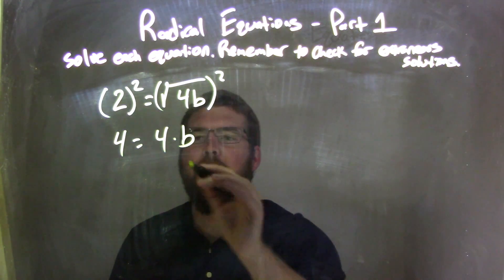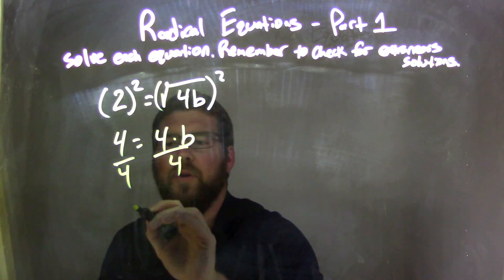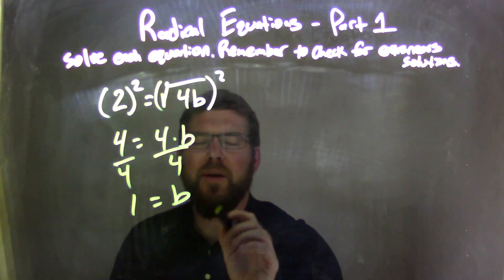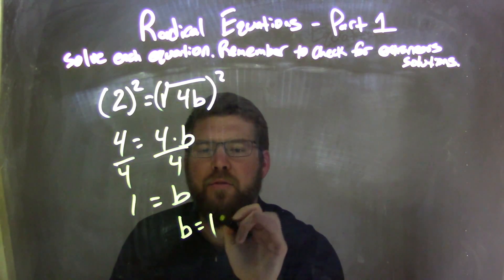To get b by itself, I have to divide by 4 on both sides, leaving 4 divided by 4 is 1, equals b. I can rewrite this to make it nice and neat as b equals 1.